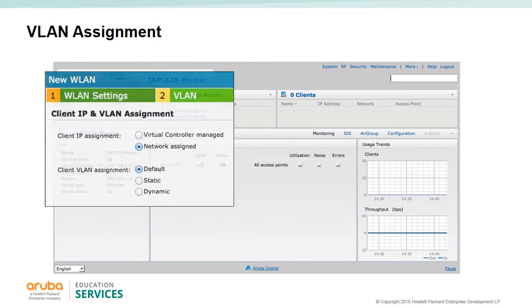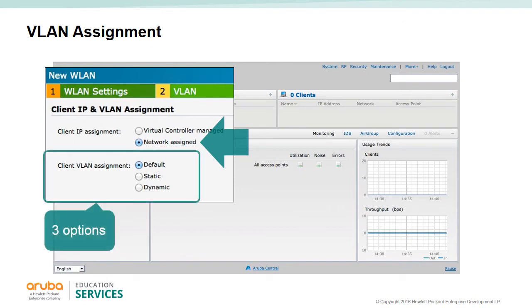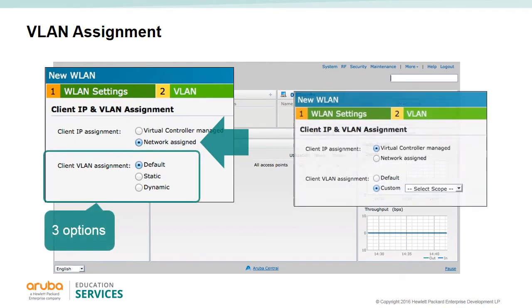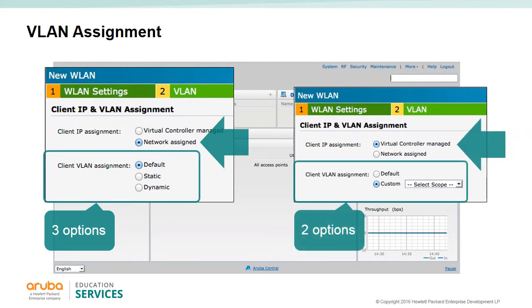The second wireless LAN wizard window is the VLAN selection. There are five starting points to set up an SSID with a VLAN setting. The network assigned option is typically used for corporate users and has three choices: default, static, and dynamic. For the virtual controller managed option, the default setting is typically used to assign an IP address to the guest.